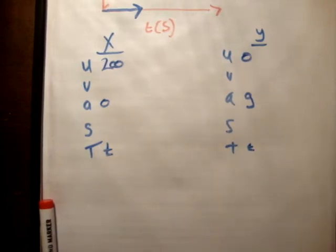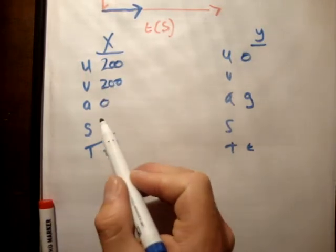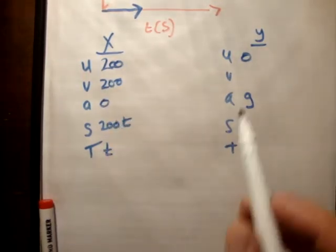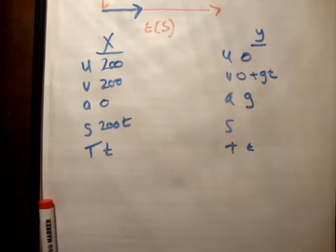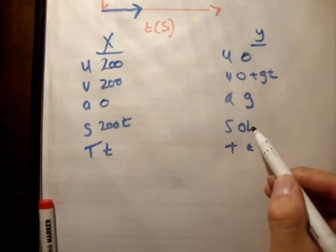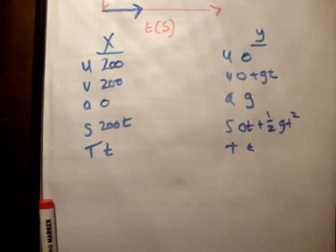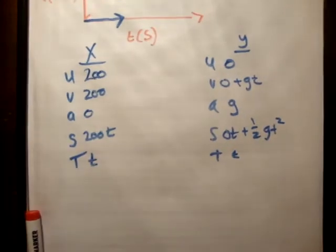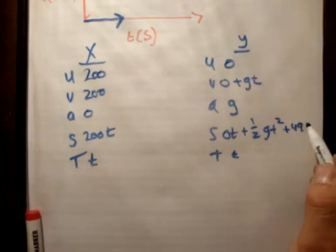Now, let's get the other expressions. So V is equal to U plus AT. This is 200 and this is 200T. V is equal to U, which is 0 plus GT. And S is equal to UT, so 0T plus 1 half GT squared. And the other thing is we need to add 490 meters because this is 490 meters above ground.